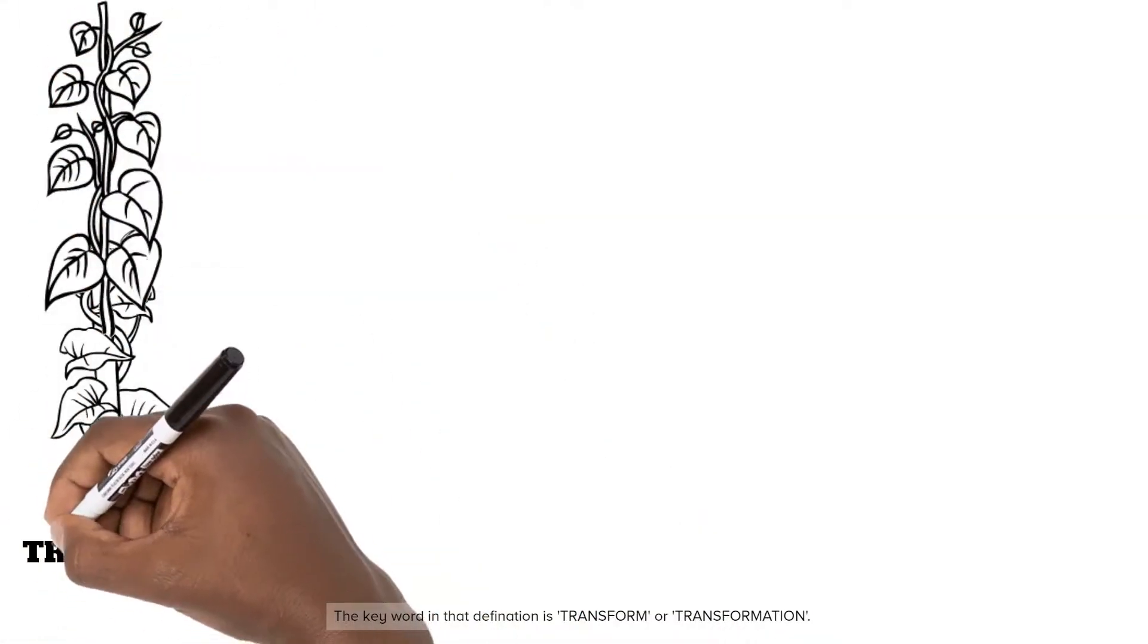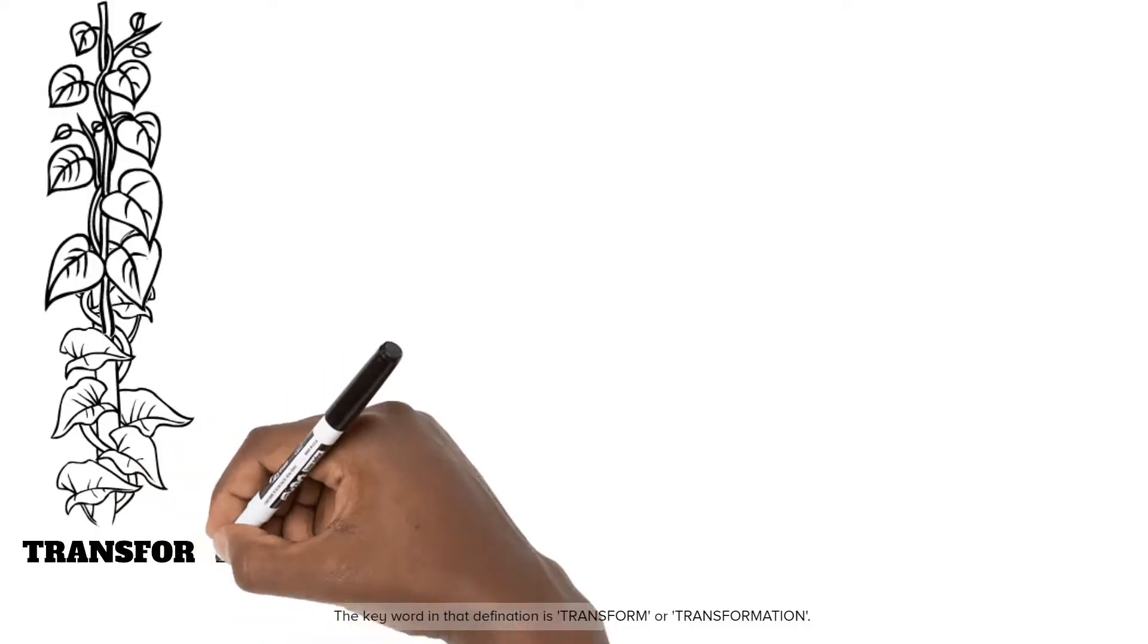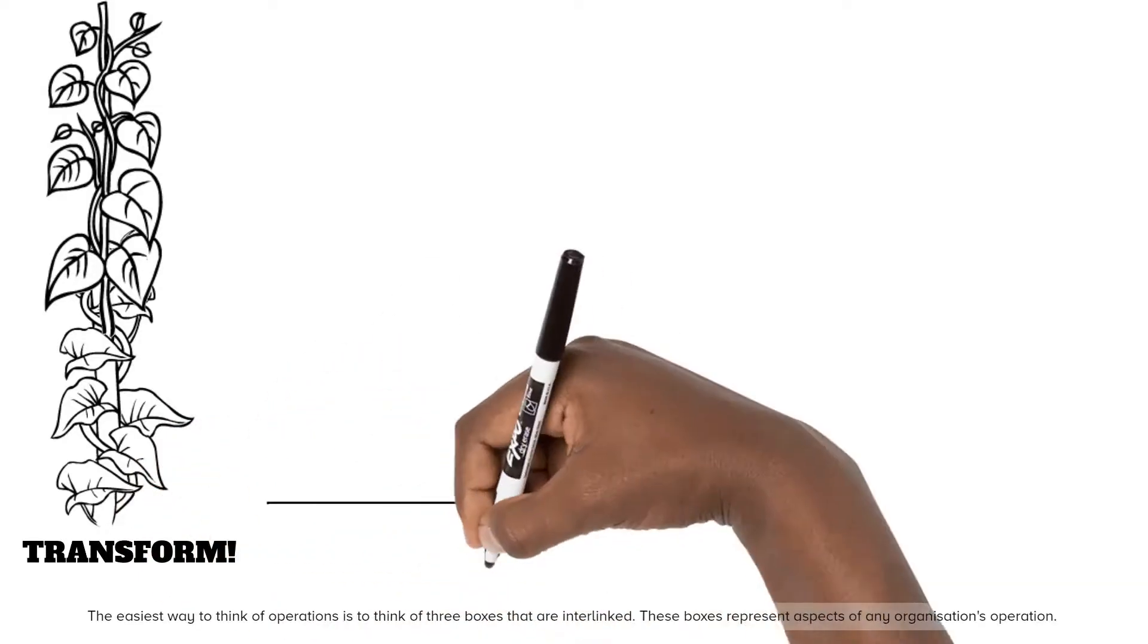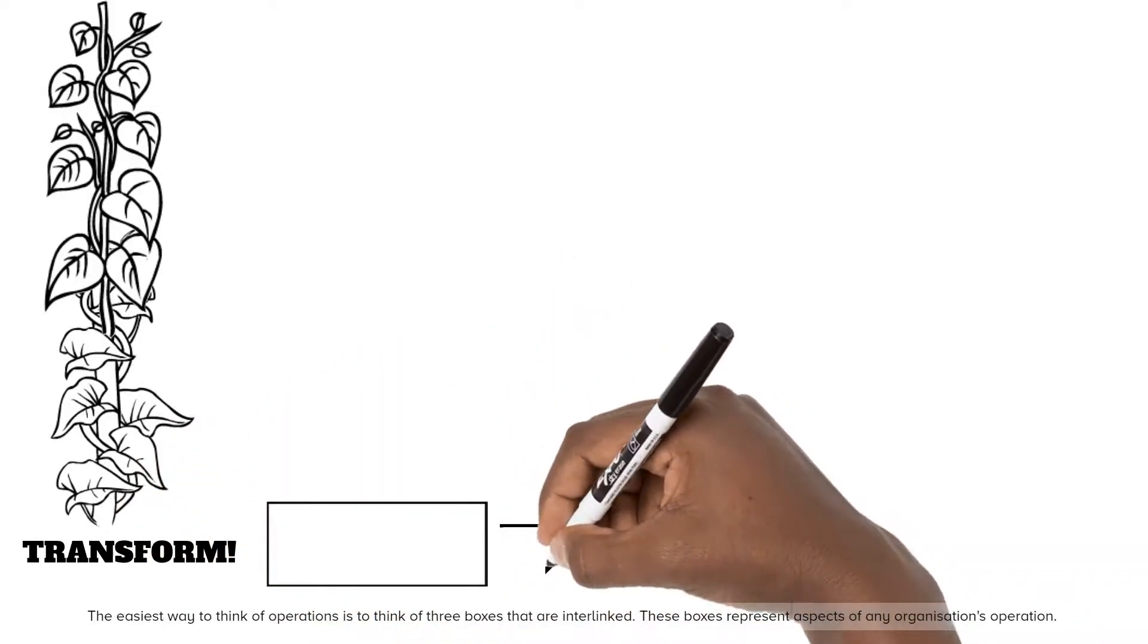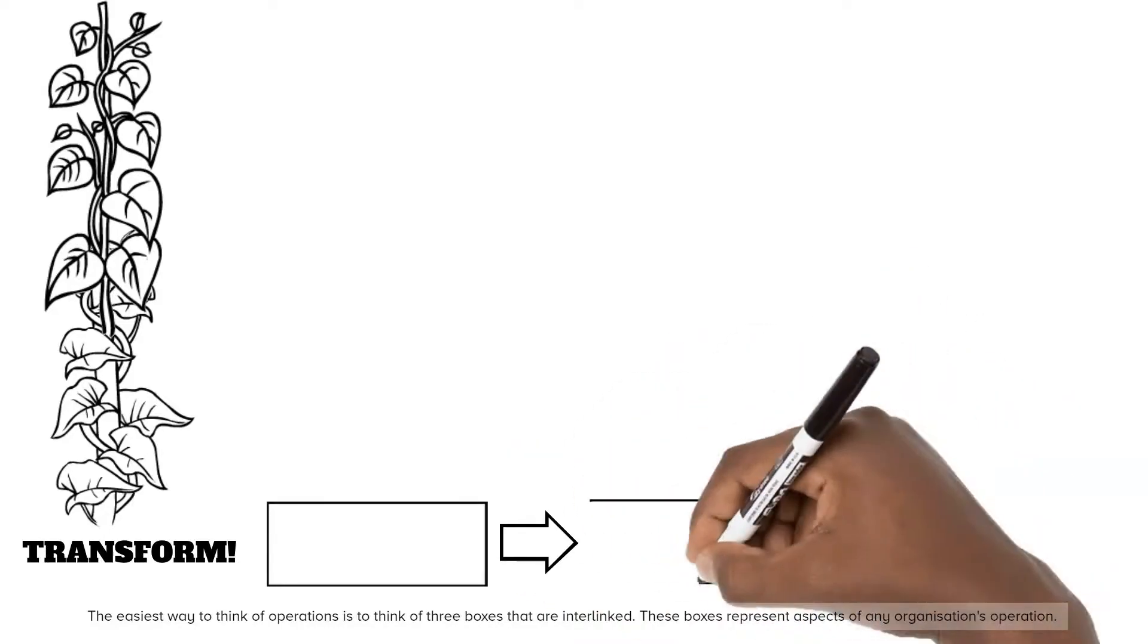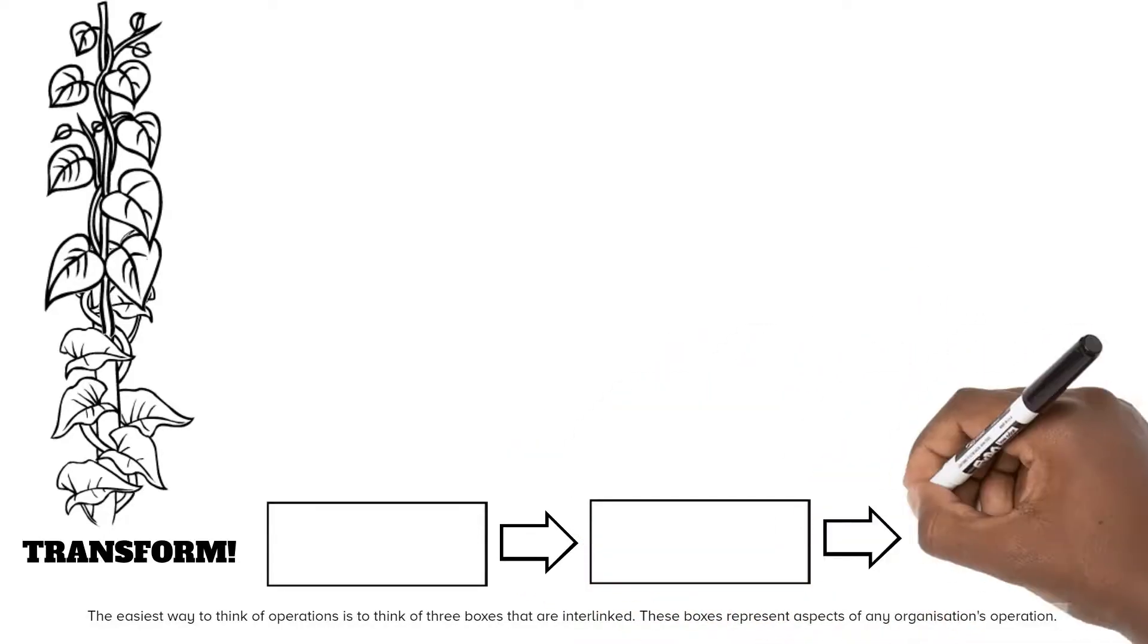The key word in that definition is transform or transformation. The easiest way to think of operations is to think of three boxes that are interlinked. These boxes represent aspects of any organization's operation.